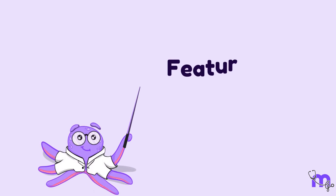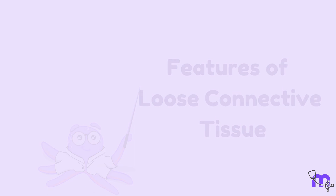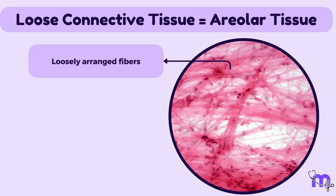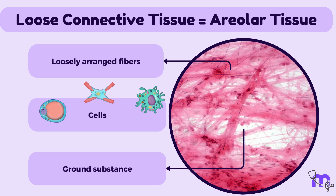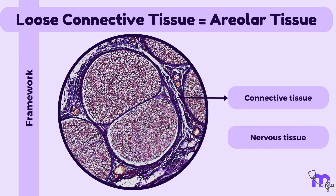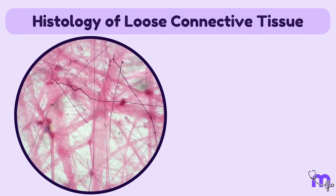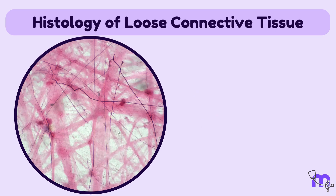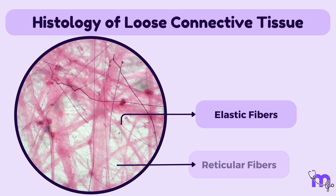Let us start with the features of loose connective tissue, also called areolar tissue. It is a type of connective tissue made up of loosely arranged fibres, cells and ground substance. It forms the framework for organs, muscles and nerves. The fibres in loose connective tissue are predominantly collagen fibres, which are thick and form a loose network. There are also a few elastic fibres and reticular fibres present.